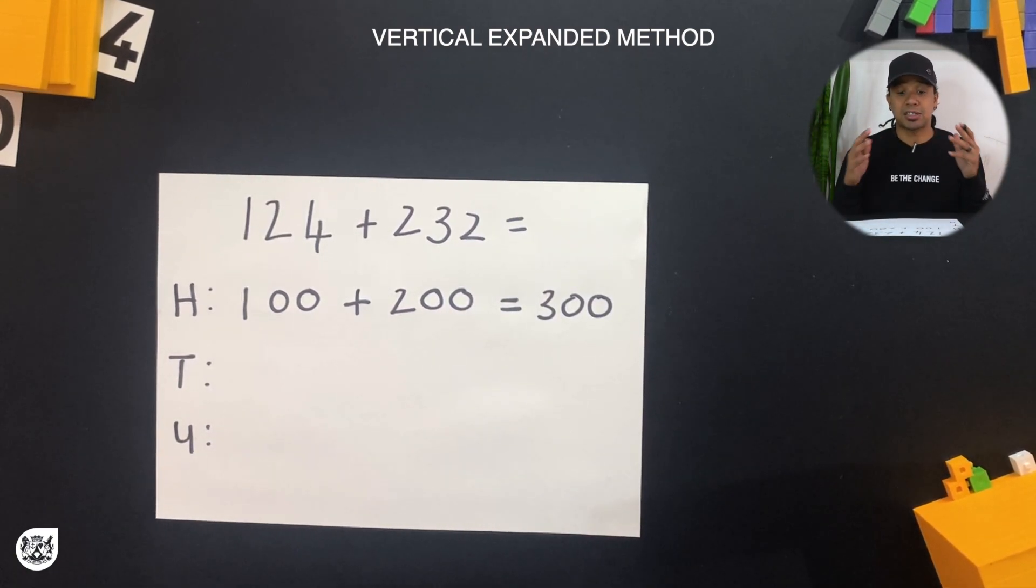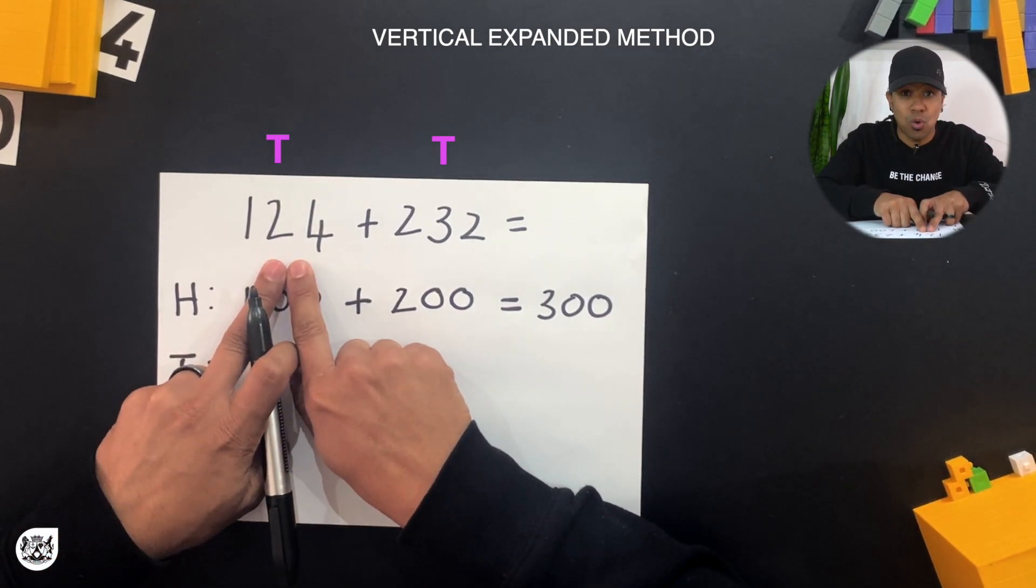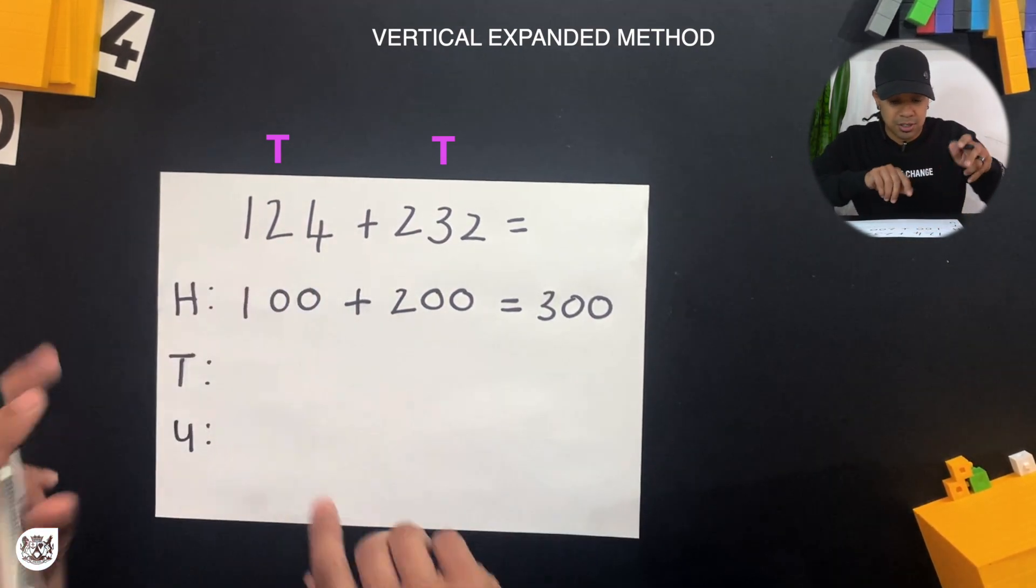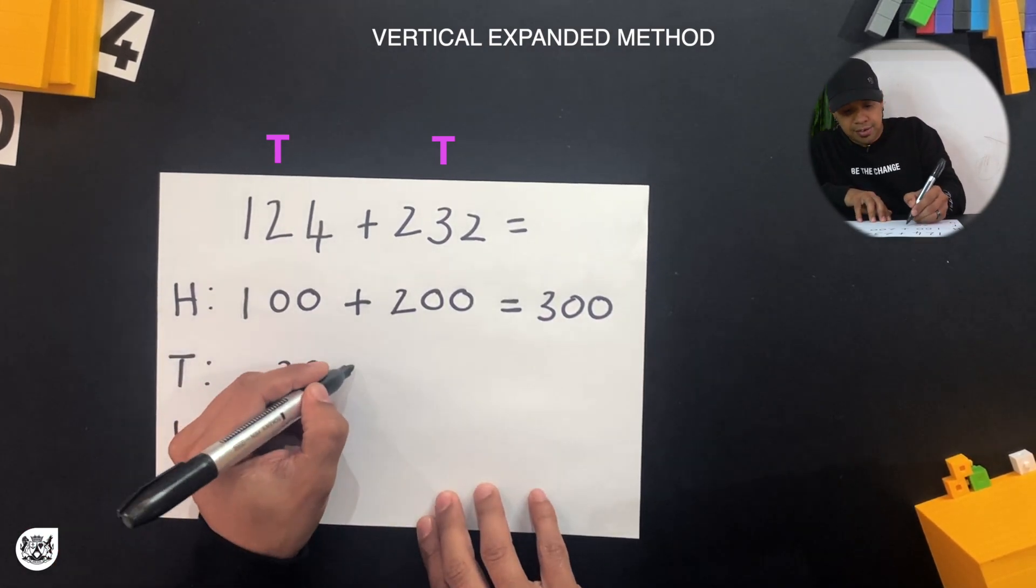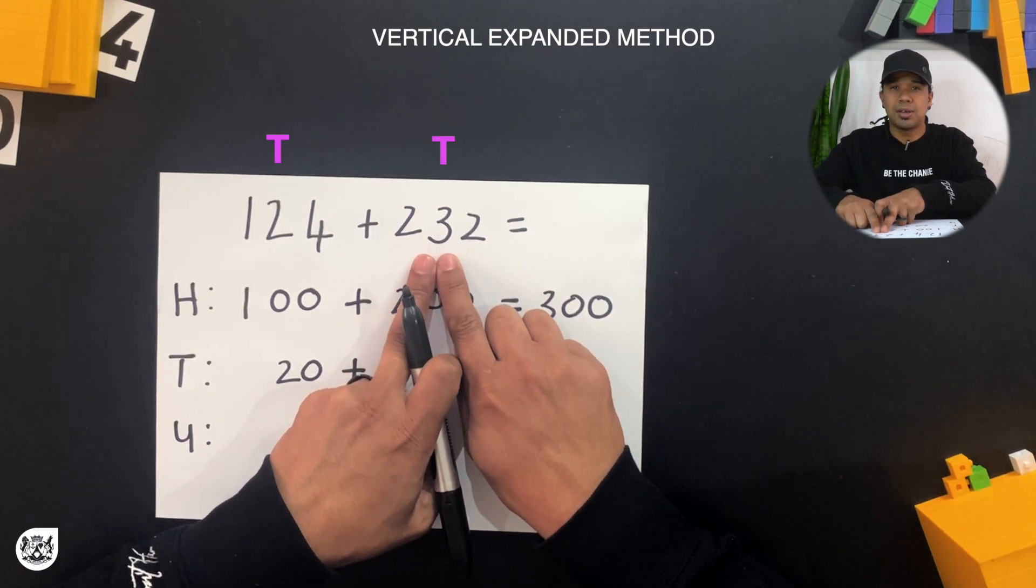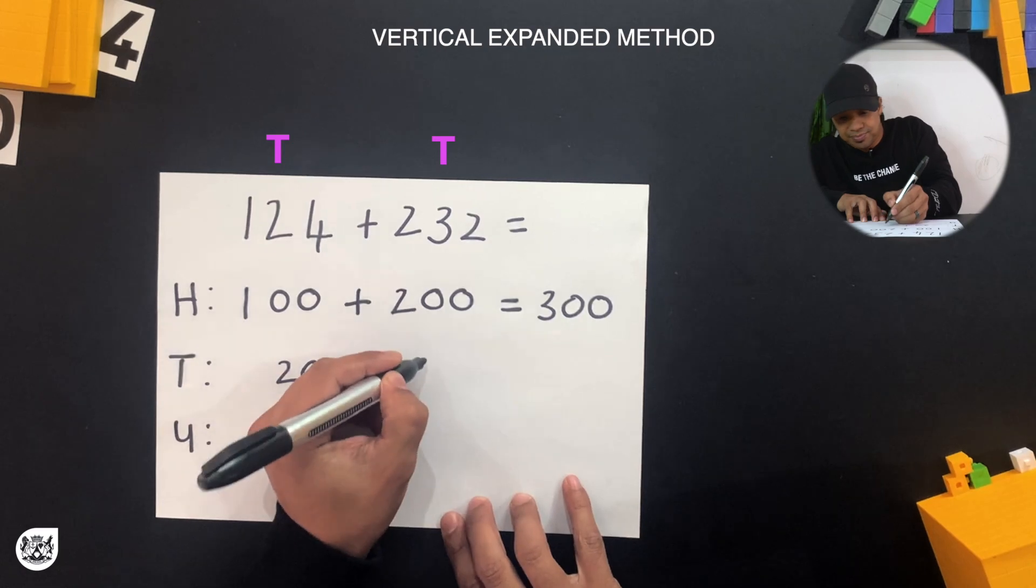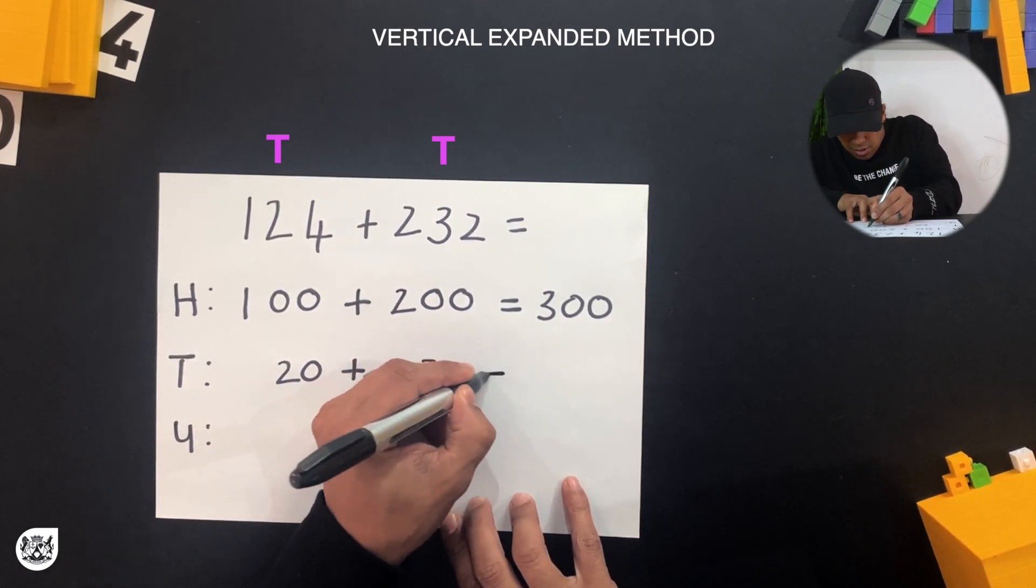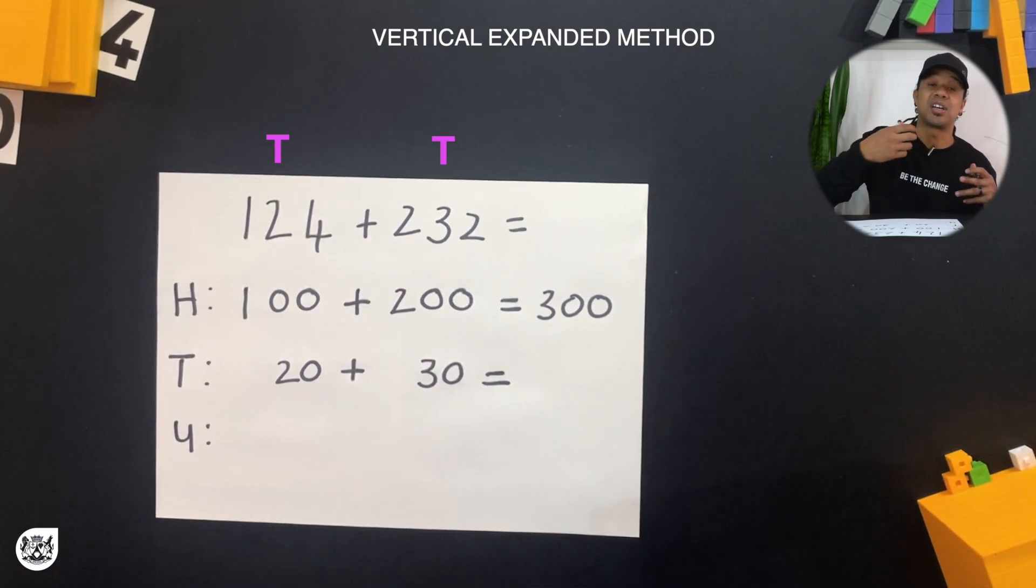Next we're going to look at our tens place. In 124 we've got 2 in the tens place and that is 20. Put down the addition sign. In 232, 3 is in the tens place and 3 tens is 30. And 20 plus 30 will give us 50.